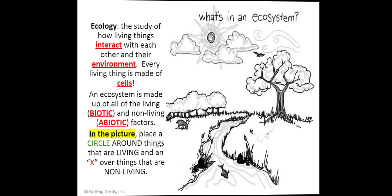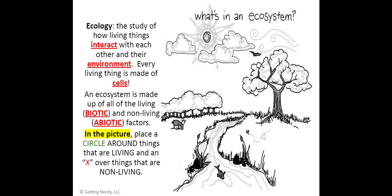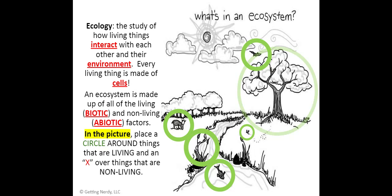In this picture, we're going to circle all the living things. That deer — living. That bird up there — living. That little fish swimming down in that stream — living. That little tiny insect — living as well. That plant right there has cells, it is living, and that beautiful tree — living. Those are the biotic elements.